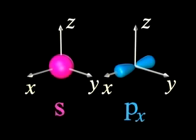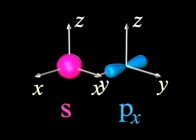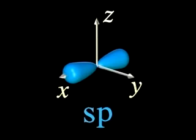When we mix an S and a PX orbital, we produce two hybrid orbitals called SP pointed in opposite directions along the X axis.